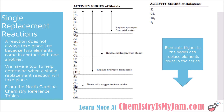Before we continue with the examples, recognize that every time an element and a compound come in contact with each other, that does not mean that a reaction is going to take place. In the case of a single replacement reaction, we have a tool that helps us determine when the reaction takes place, and that tool is called the activity series. There's an activity series for metals when you have a metal trying to replace another metal, and there's an activity series for non-metals — specifically for the halogens — when a halogen is trying to replace another halogen. An element higher in the series can replace an element lower in the series.